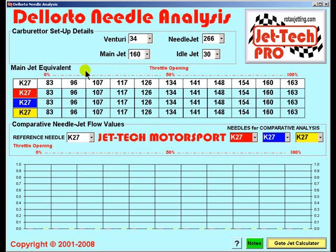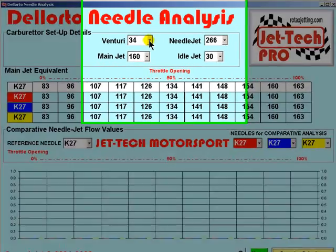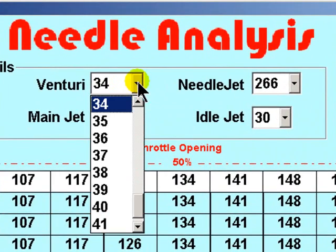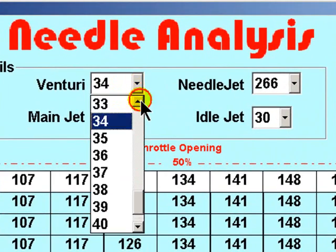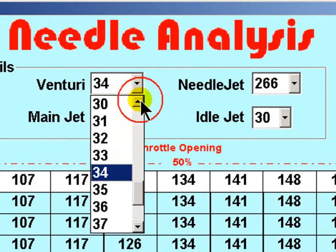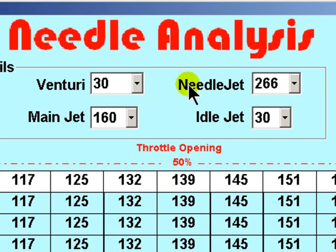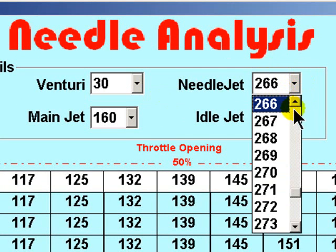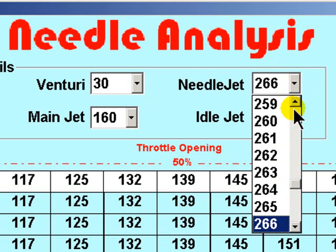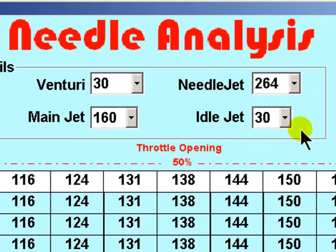To use the Needle Analysis screen you simply first enter your carburetor's configuration, and let's assume in this case we are using the Vortex carb.